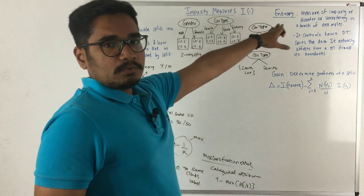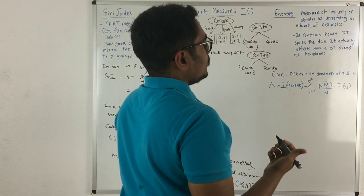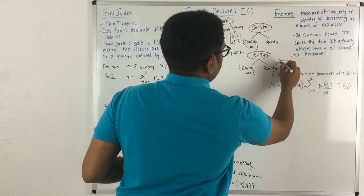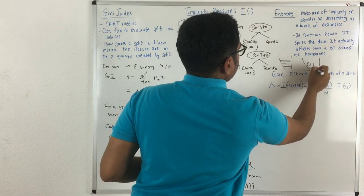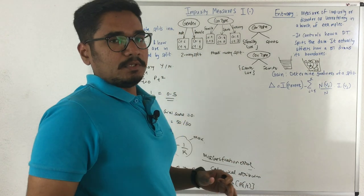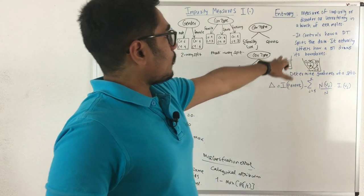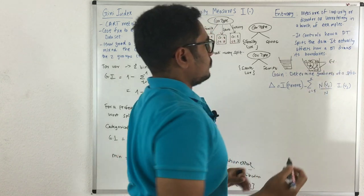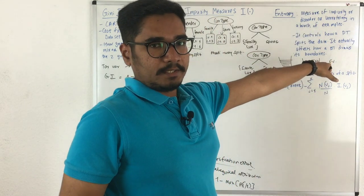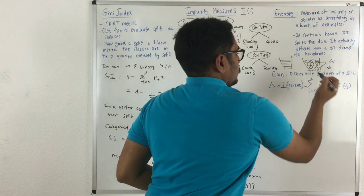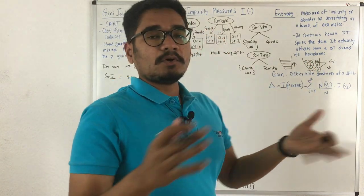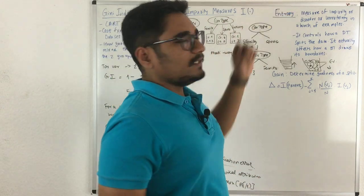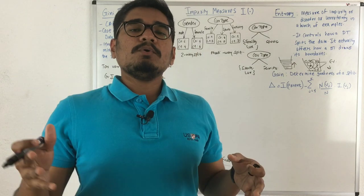The second impurity measure used in decision trees is entropy. The measure of impurity, disorder, or uncertainty in a bunch of examples is called impurity. For example, consider a glass of water and a glass of ice cubes — if asked which has the highest entropy, you might say ice cubes, but actually the glass of water has higher entropy. The glass of water has high entropy while the ice cubes have low entropy. This concept comes from thermodynamics, but in decision trees it measures impurity and how the decision tree draws its boundaries.